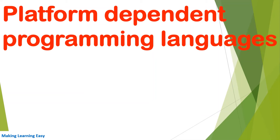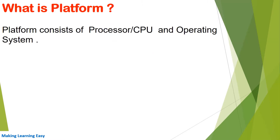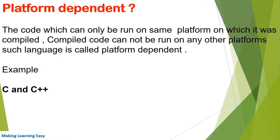Hello everyone, welcome to the session. In this session we will discuss what is platform dependent programming languages. Platform consists of a processor (CPU) and the operating system. A platform dependent programming language is one where the code can only be run on the same platform on which it was compiled, or in other words, the compiled code cannot be run on any other platform.